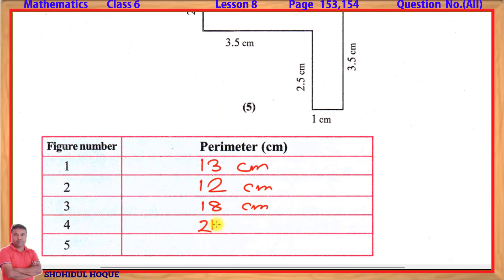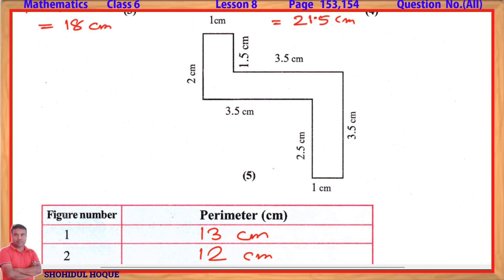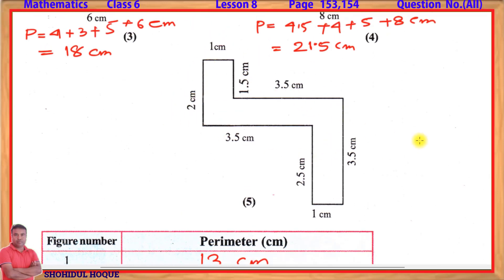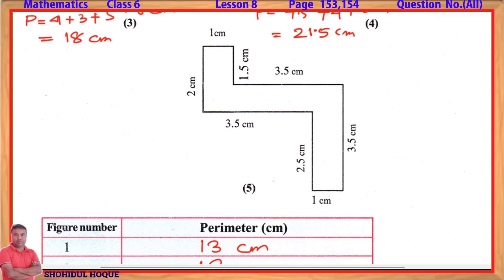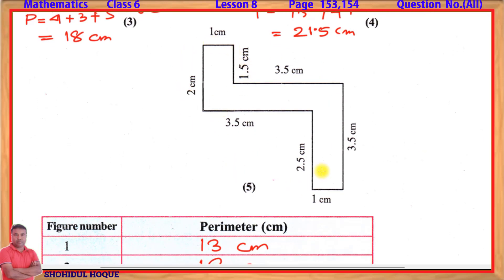Next is figure number 5. This figure has 12 different sides visible. Counting the sides: one, two, three, four, five, six, seven, eight — total eight sides. The sum of all these side measurements will give us the perimeter of figure number 5.